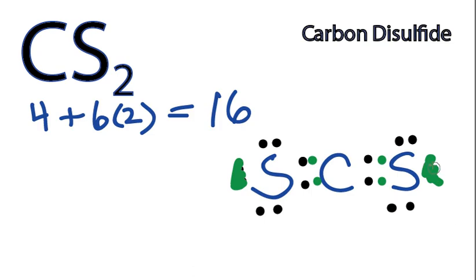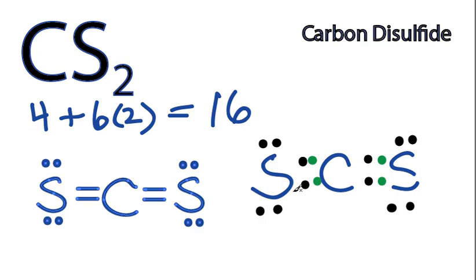So we have this structure here, and we can also write it as what is called a structural formula. And that's going to look like this right here. And with the structural formula, a line represents a pair of electrons.